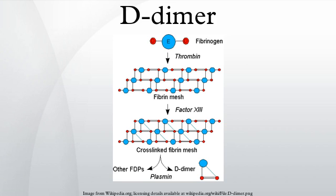The resultant fragments, high molecular weight polymers, are digested several times more by plasmin to lead to intermediate and then to small polymers. The cross-link between two D-fragments remains intact, however, and these are exposed on the surface when the fibrin fragments are sufficiently digested. The typical D-dimer-containing fragment contains two D-domains and one E-domain of the original fibrinogen molecule.